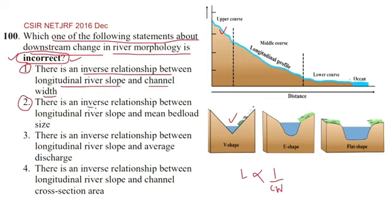Now the second option is there is an inverse relationship between the longitudinal river slope and mean bed load size.